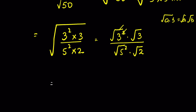So we have square root of 3 times square root of 3 — removing the square root with the square — upon 5 times square root of 2.